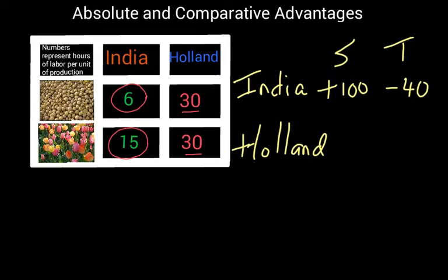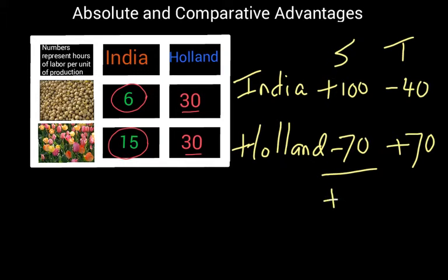Holland is going to specialize in the production of tulips. Let's say they increase their production by 70 cases of tulips, and since it takes them the same number of labor hours to make tulips as soybeans, they're going to have to give up 70 bushels of soybeans. So the overall production of soybeans is plus 30, and the overall production of tulips also goes up by 30 — that's 70 minus 40.